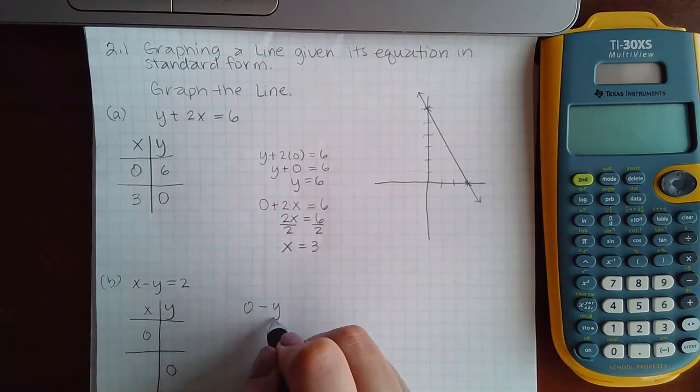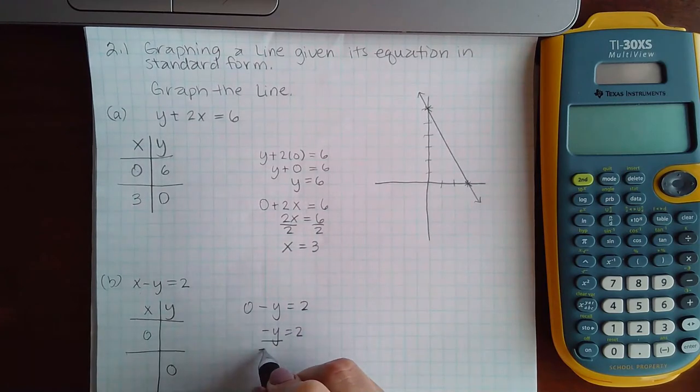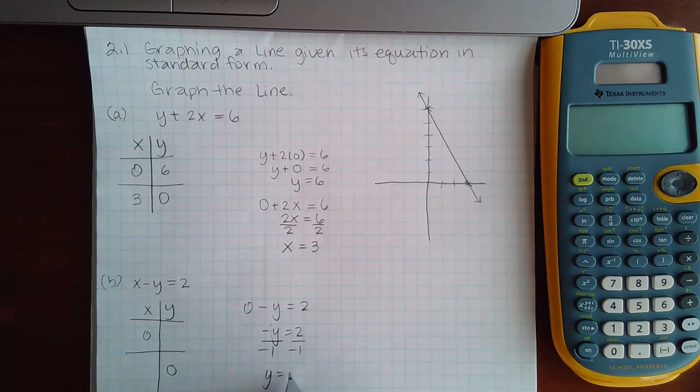So I'm going to plug 0 for x, that's the same as saying negative y equals 2. So divide by that negative 1 coefficient, we get negative 2.